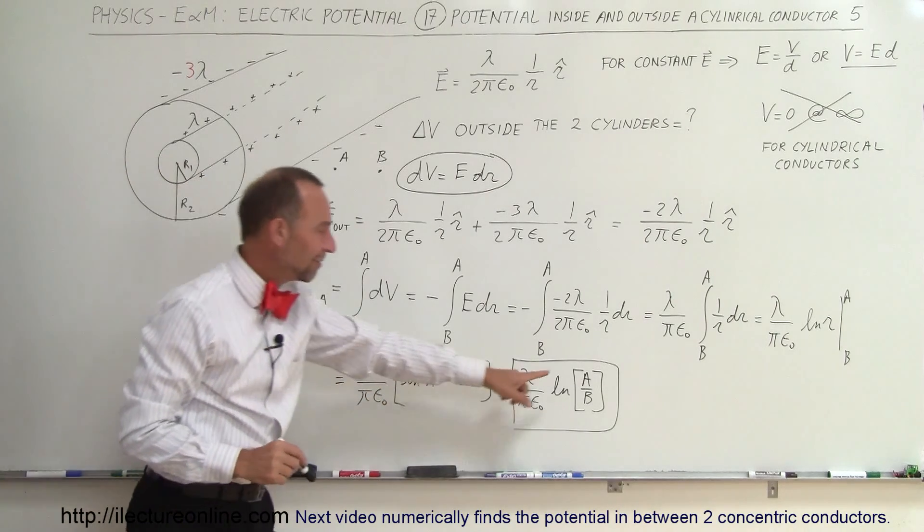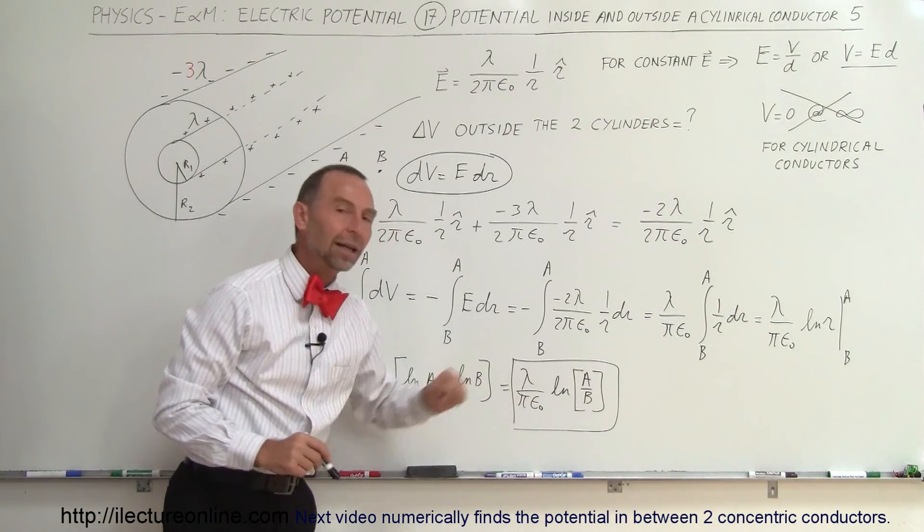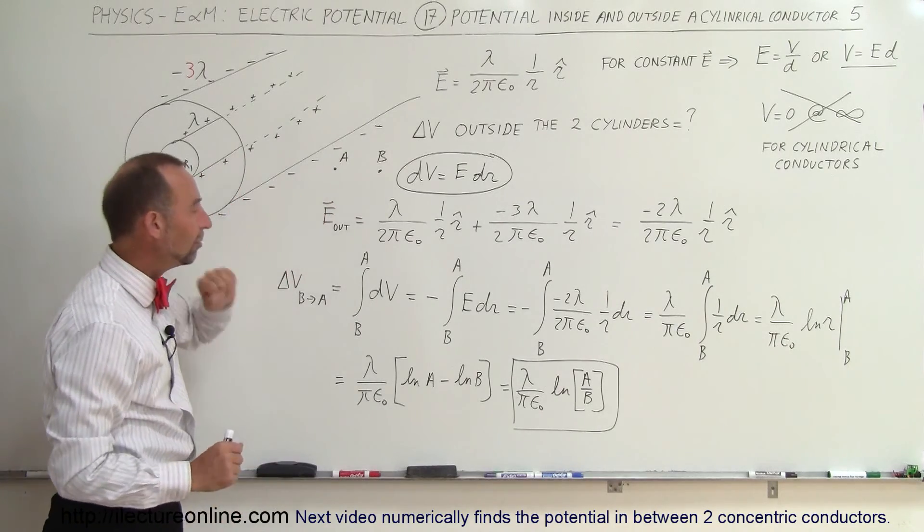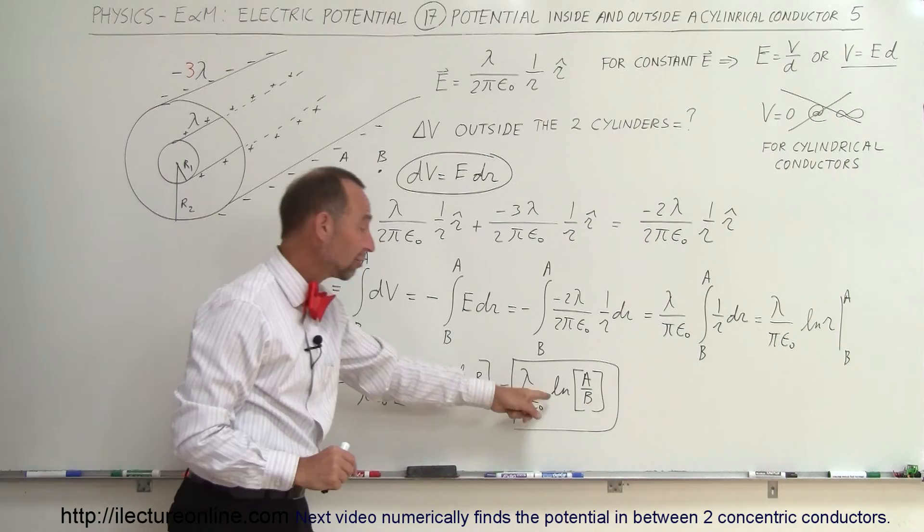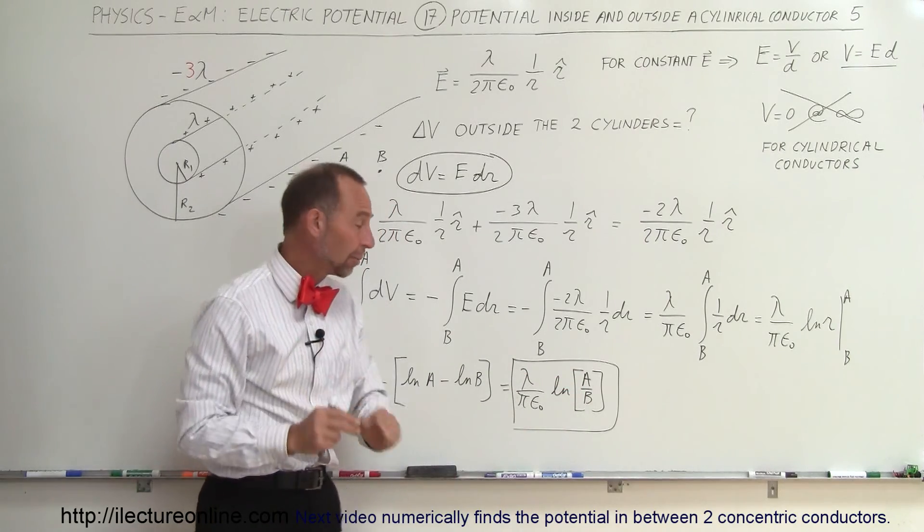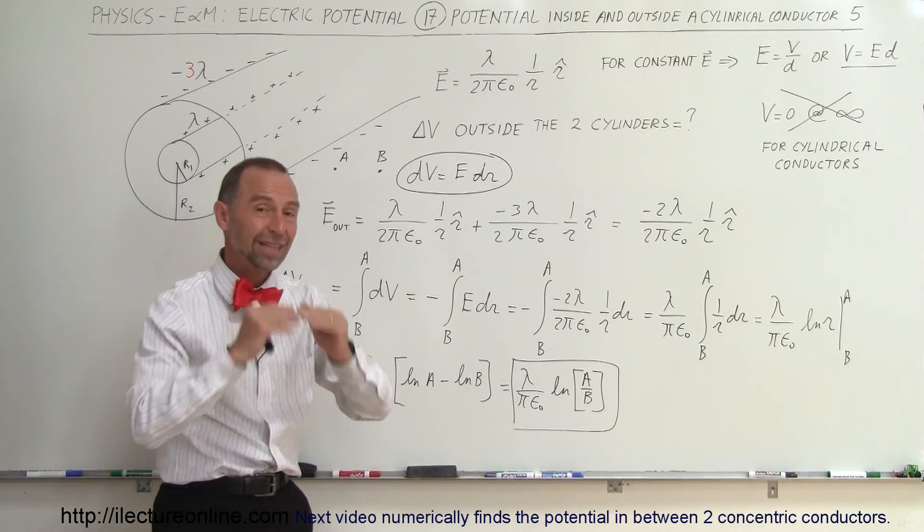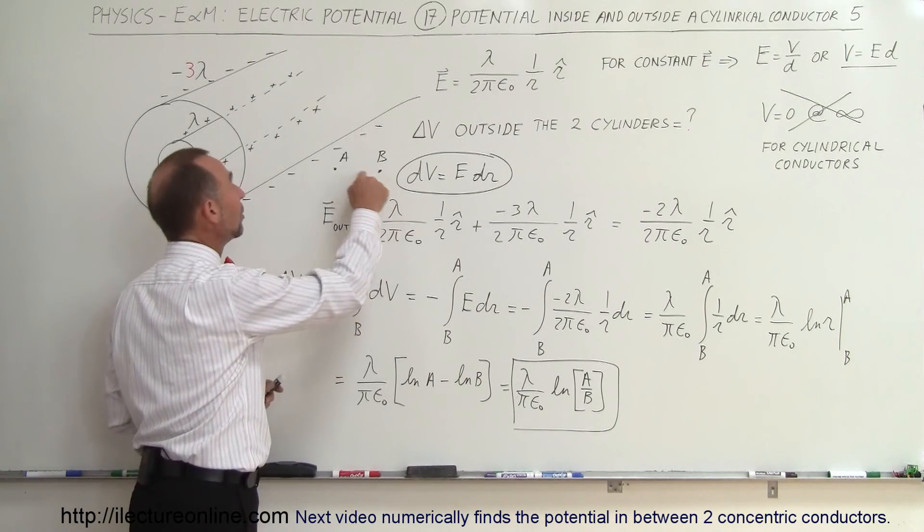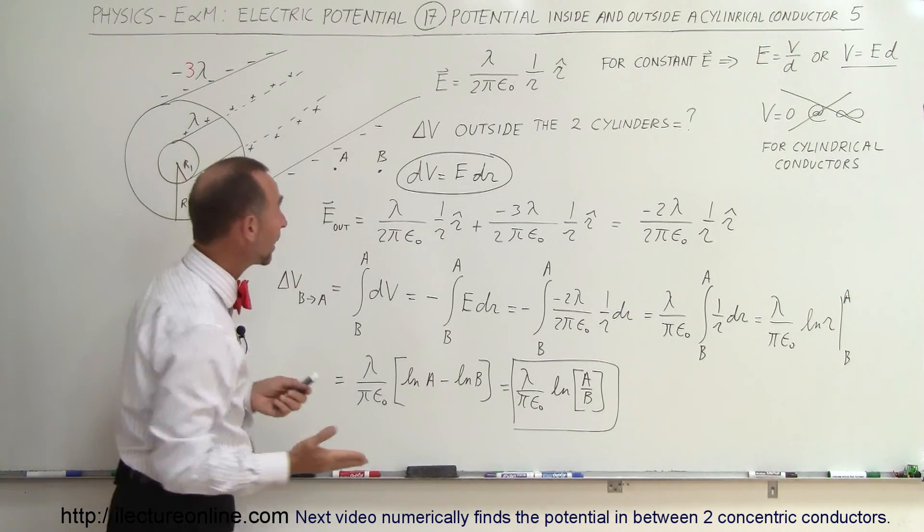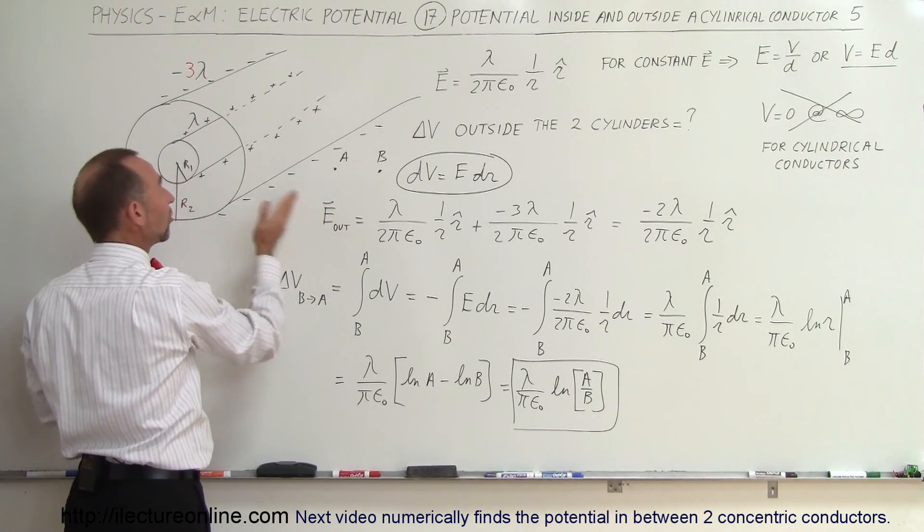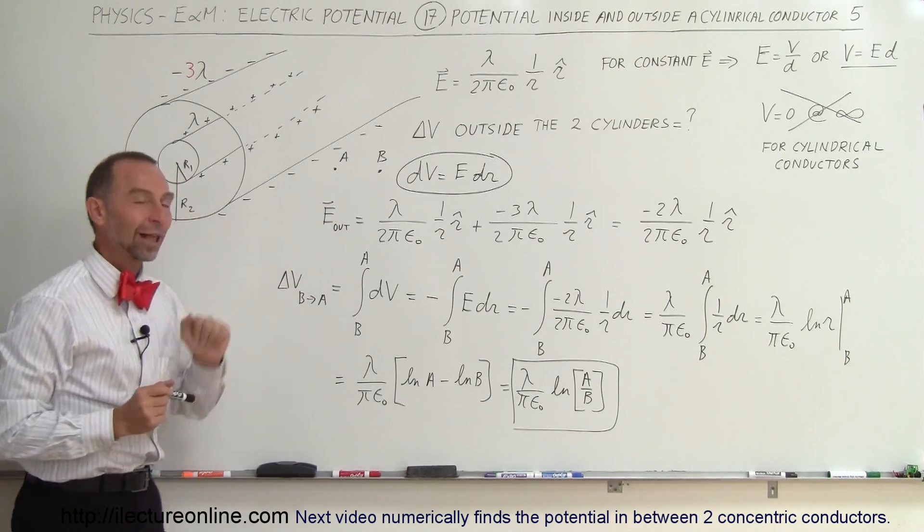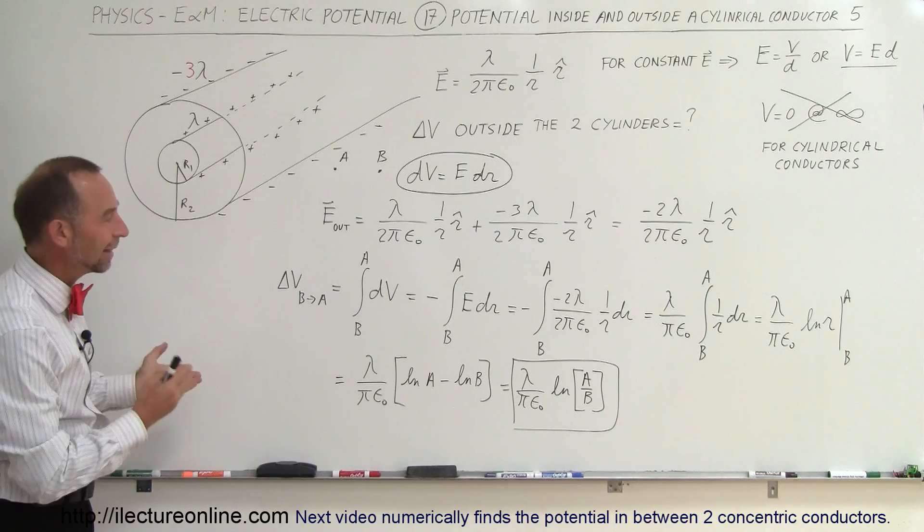And notice also, if B is bigger than A, which it is in this case, A divided by B is a number less than 1. The natural log of a number less than 1 is a negative number, which means the potential difference will decrease when we go from B to A. And that's what we expect because the predominant charge here is negative, which means the potential decreases as you get closer to the negative charge. So that looks like it works. And that's how we do that.